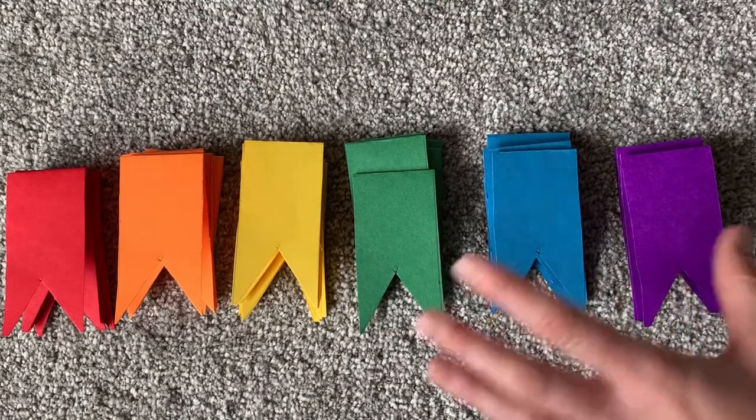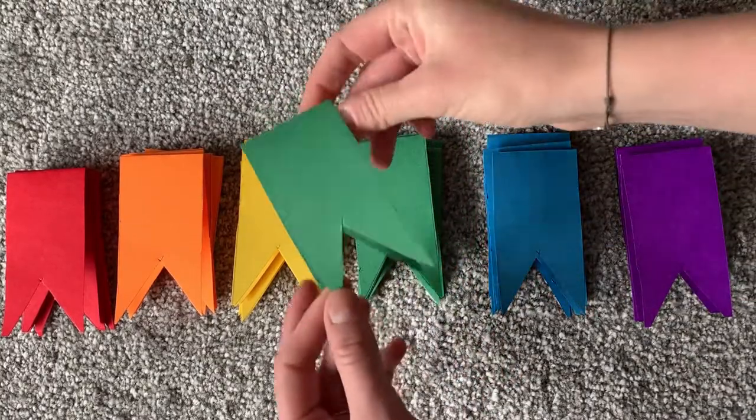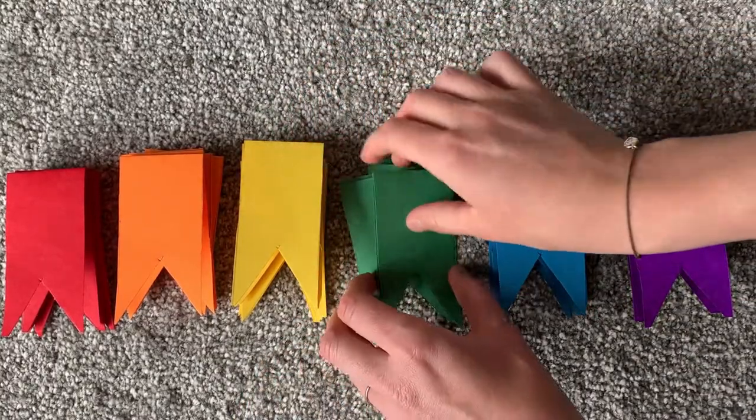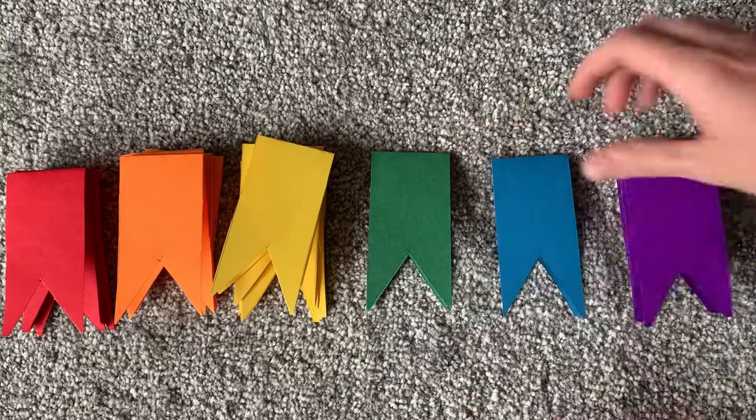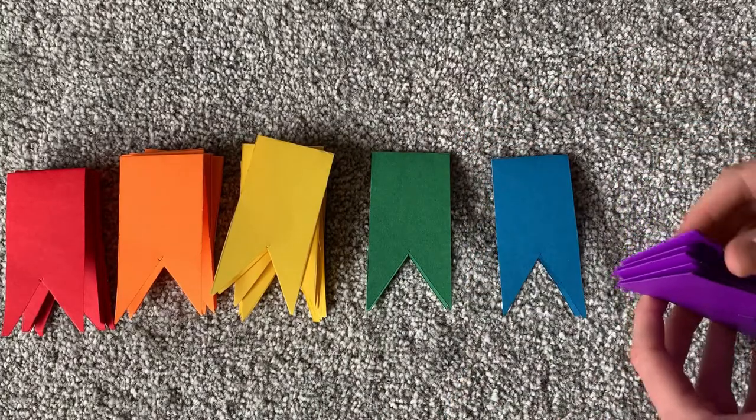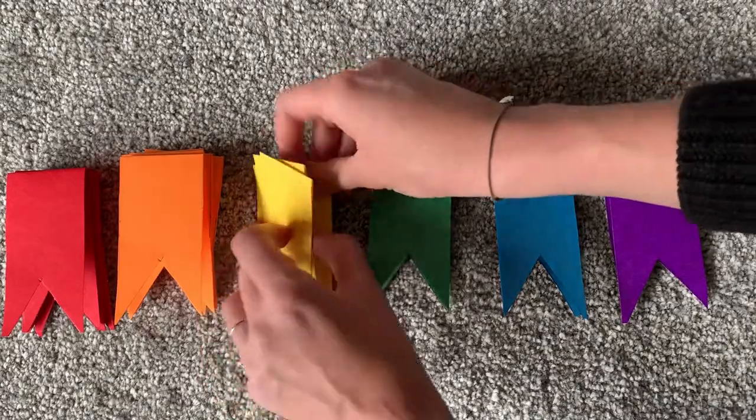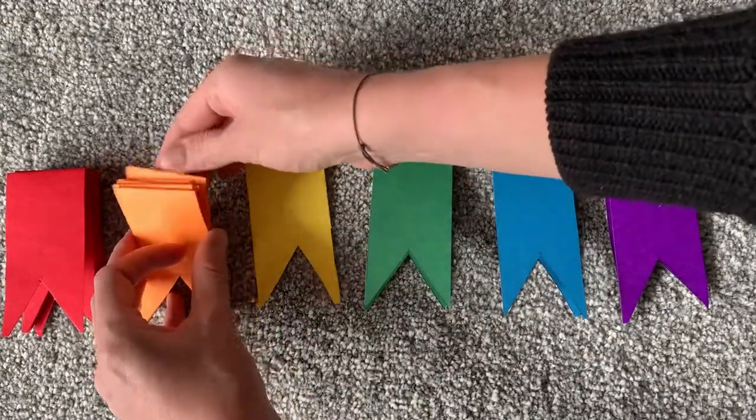So as you can see I've cut all of those shapes out now so each of these is their own individual little flag. So what I'm going to do is just get one of each in a row and I'll show you how to make your bunting.